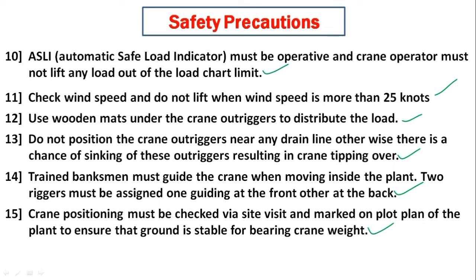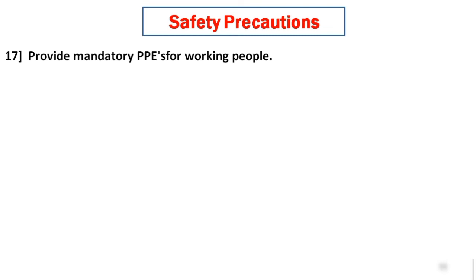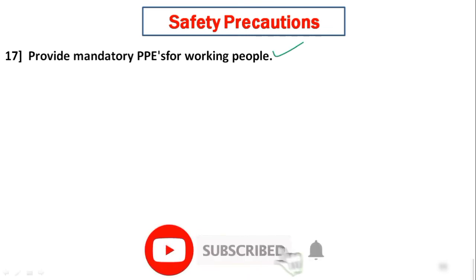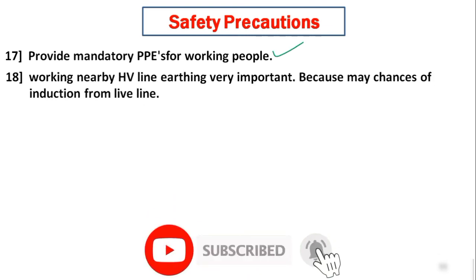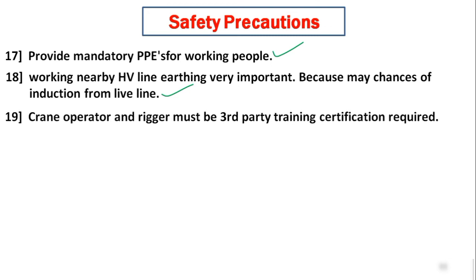Crane positioning must be checked via site visit and marked on the plot plan of the plant. Ensure that the ground is stable for bearing the crane weight. Always provide barricades and proper signages to keep unauthorized personnel away from the lifting area. Provide mandatory PPE for the working force. When working nearby high-voltage lines, be aware of the chances of induction from live lines.